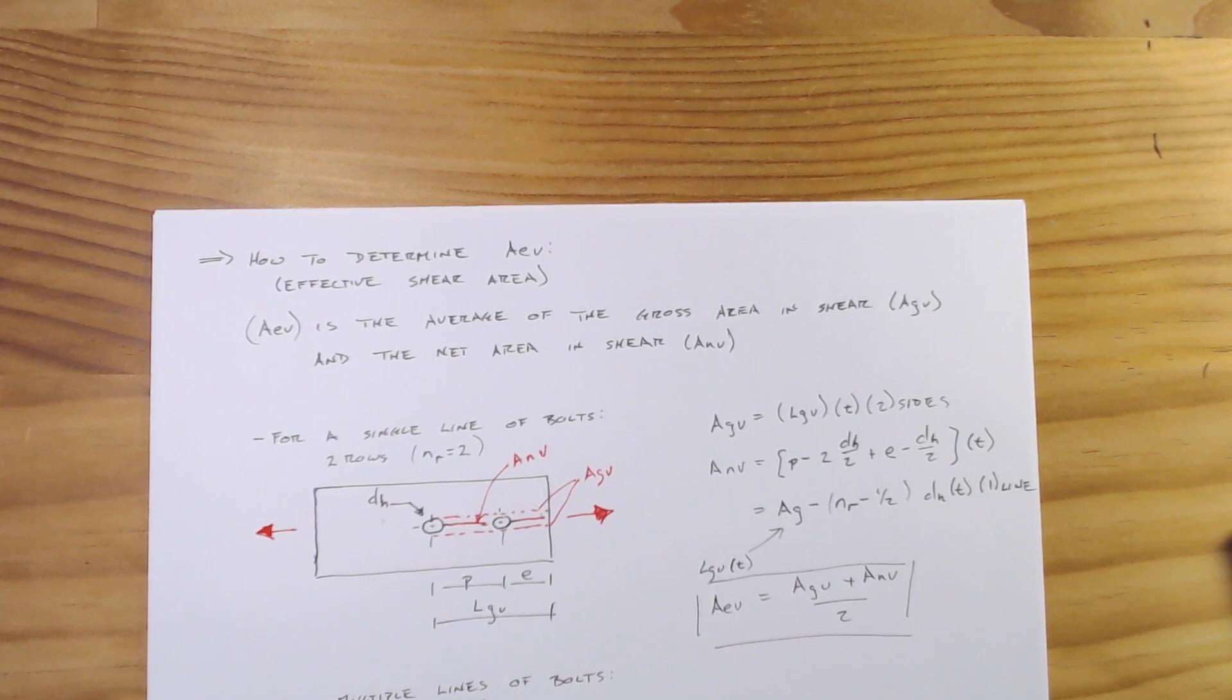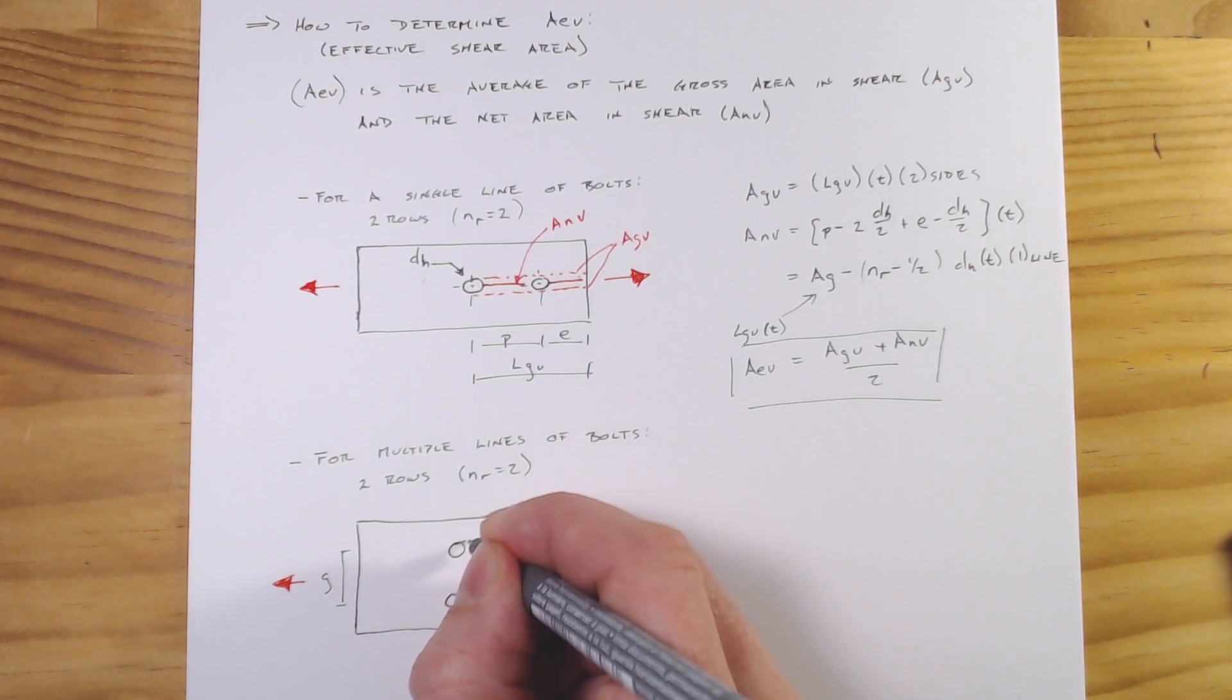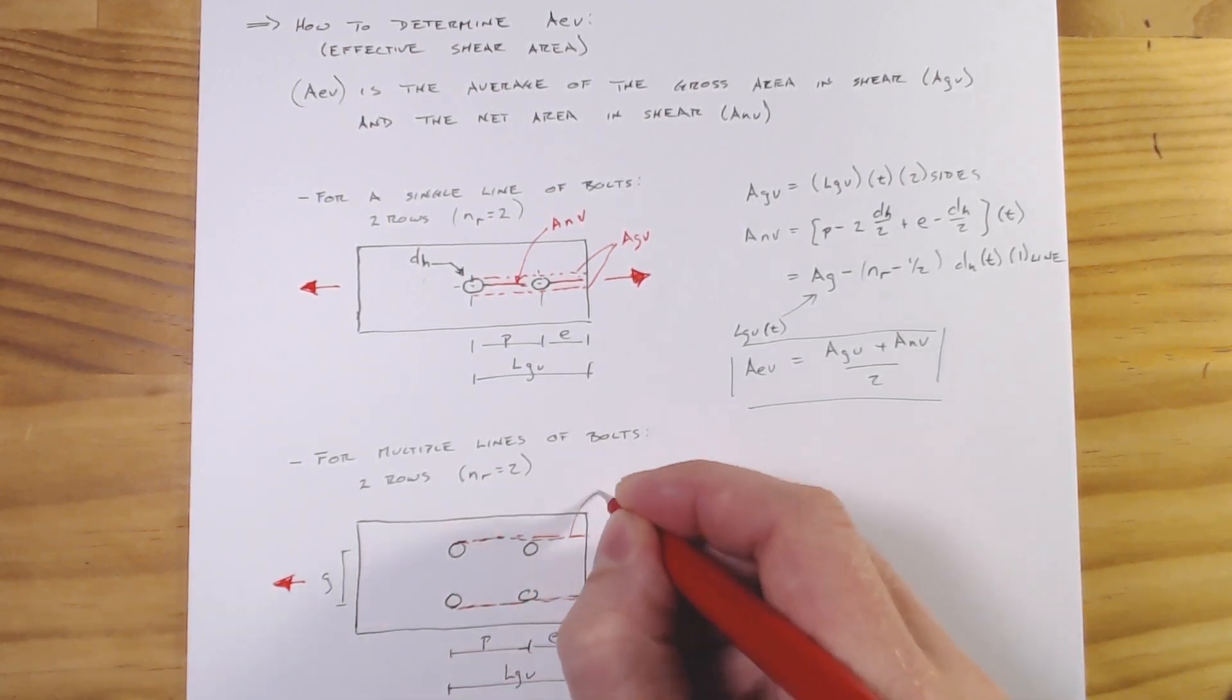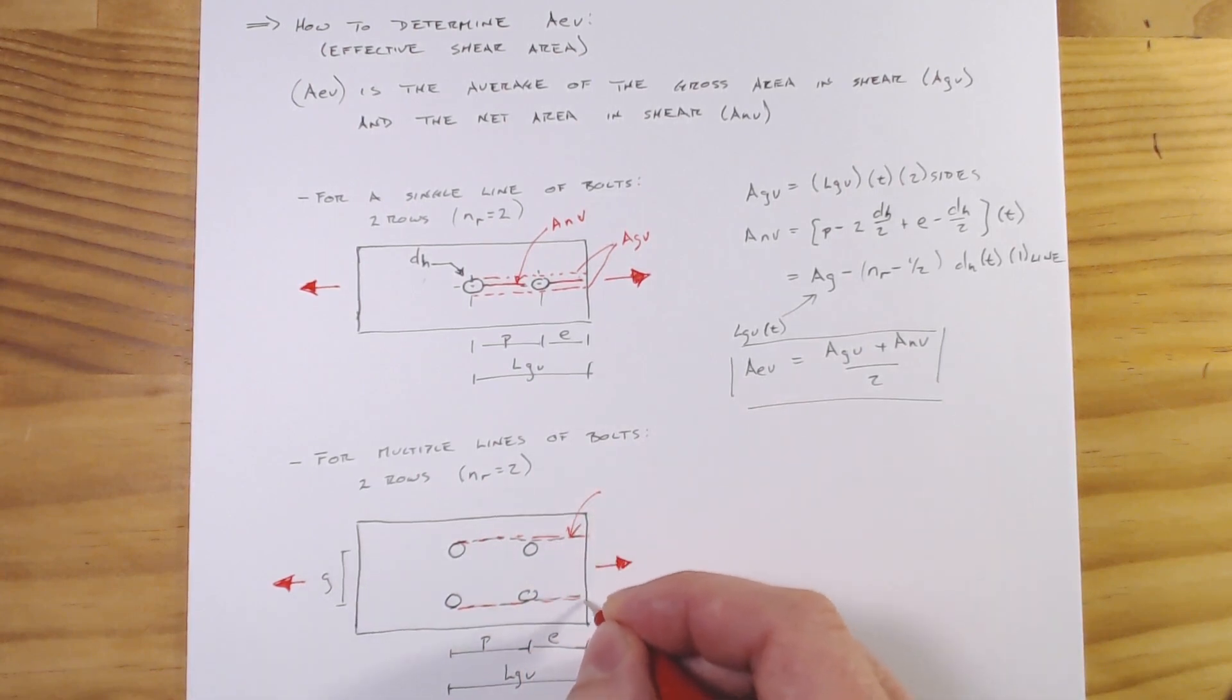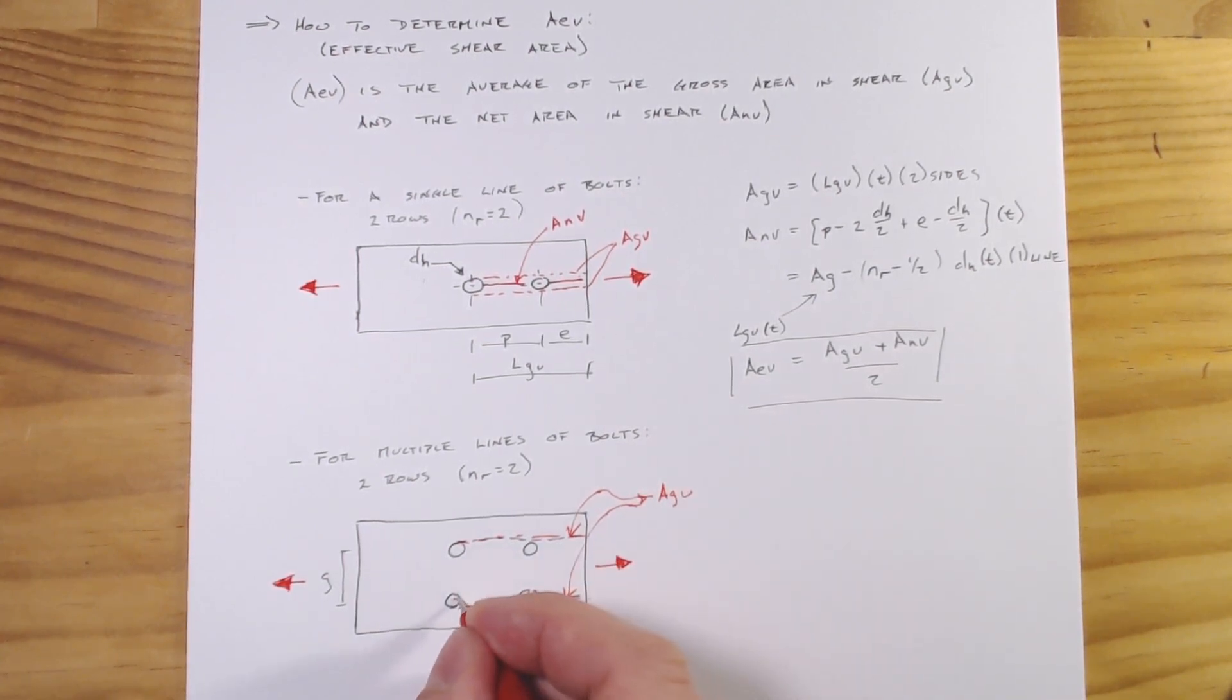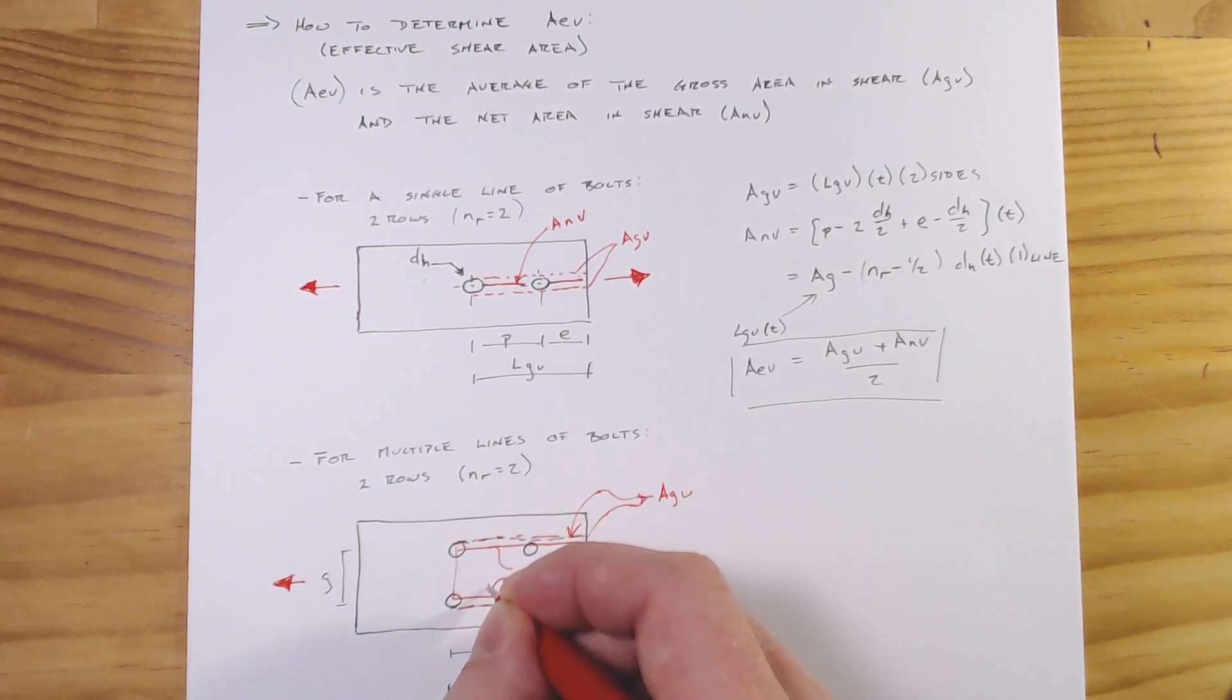So that's for a single line of bolts. Let's just run through this quickly, what it would look like if we had two lines of bolts. And this is sort of a more classic block shear case. So I'll do our box out here. Let's do it in red. So on the edge here, the two of these together is going to be our gross area in shear. And then down the center line of the bolts, of course we'd have this block here. So this is our net area in shear.